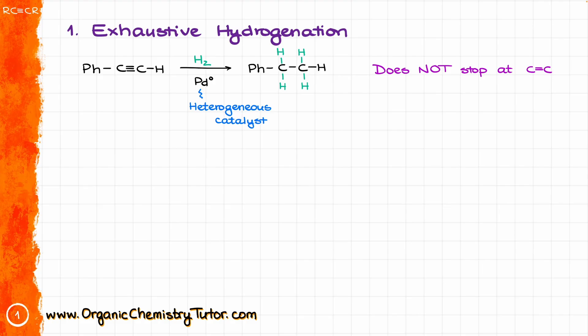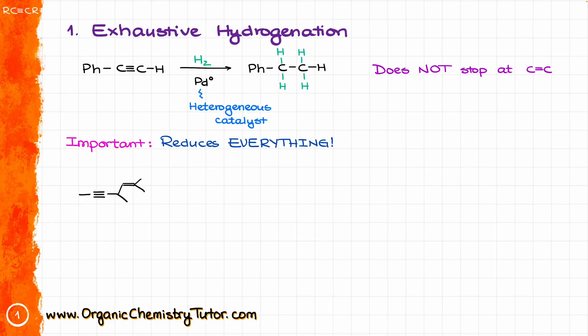The alkene double bond is more of an intermediate — we always go to the very end. Another important thing: this reaction reduces everything. If you have both triple and double bonds in your molecule, everything is going to get reduced. So if I take a molecule and react it with H2, both the triple and double bond will be reduced — we get rid of everything.